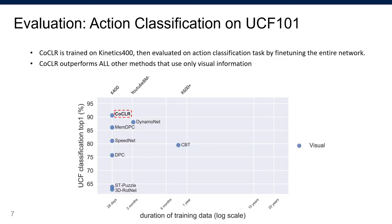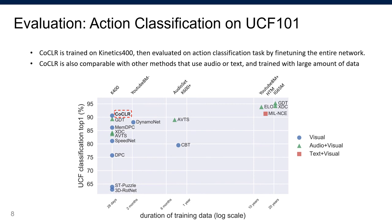CoCLR is trained on Kinetics-400 and evaluated on the action classification task on UCF101. It outperforms all other methods that only use visual information. CoCLR is also comparable with other methods that use audio or text and trained with much larger amounts of data.